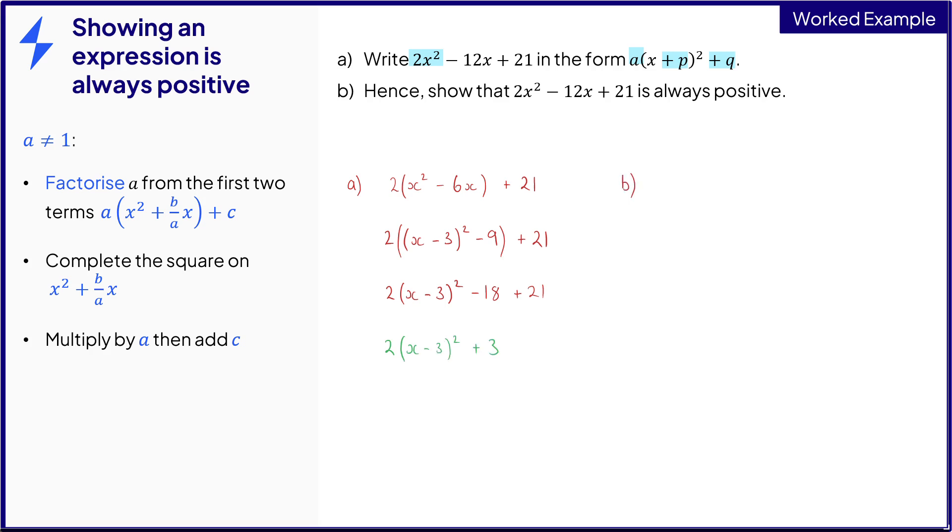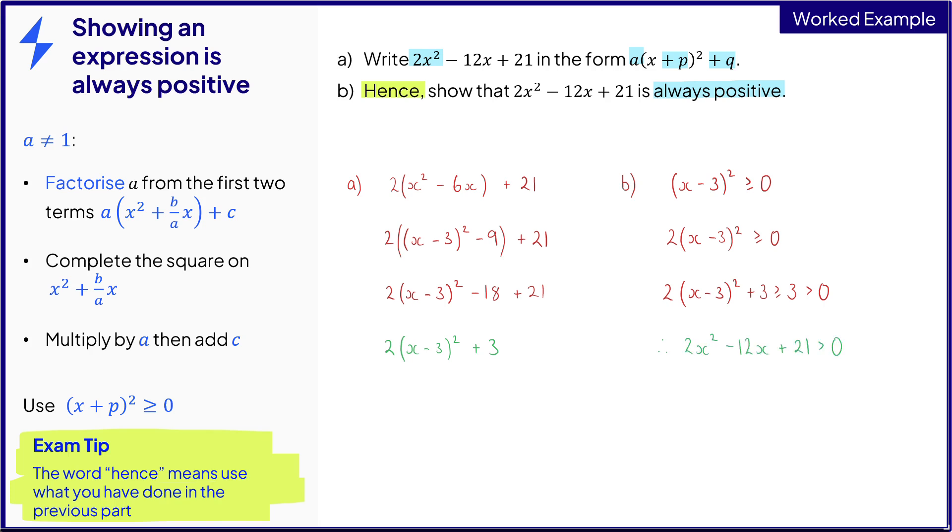For part b we're asked to show that the expression is always positive. It says the word hence so that means we have to use what we've done in part a here. The key here is that the squared term is always bigger than or equal to zero. So we can build up our expression from the square term. So multiply both sides by 2. Add 3 to both sides and we get that the quadratic is bigger than or equal to 3 and 3 is greater than 0. So we know that the whole quadratic must be bigger than 0. Therefore it's positive.